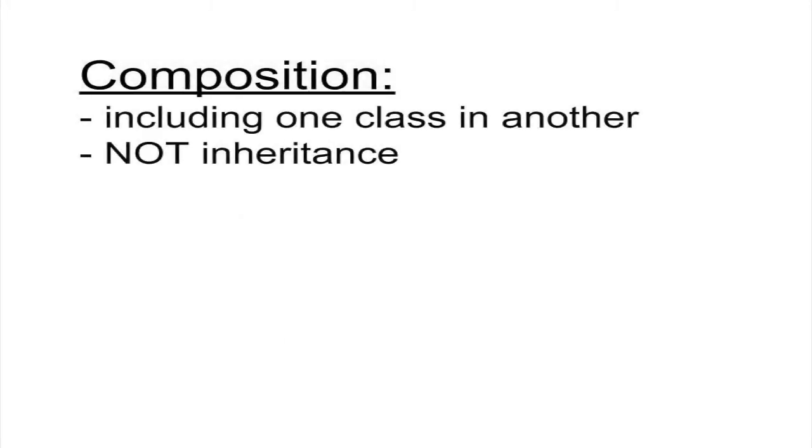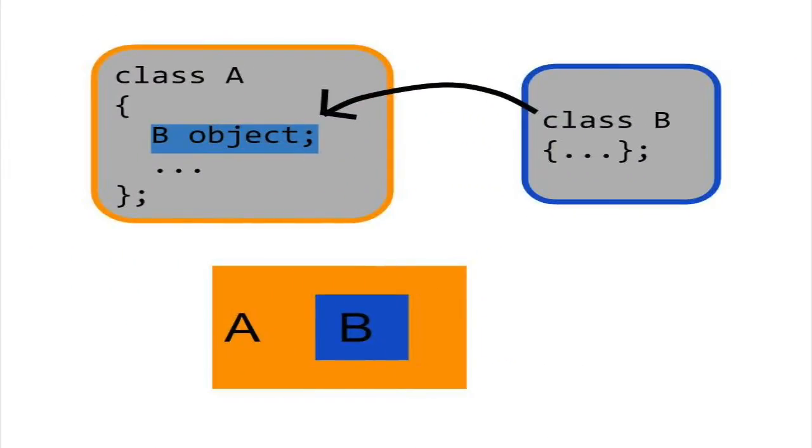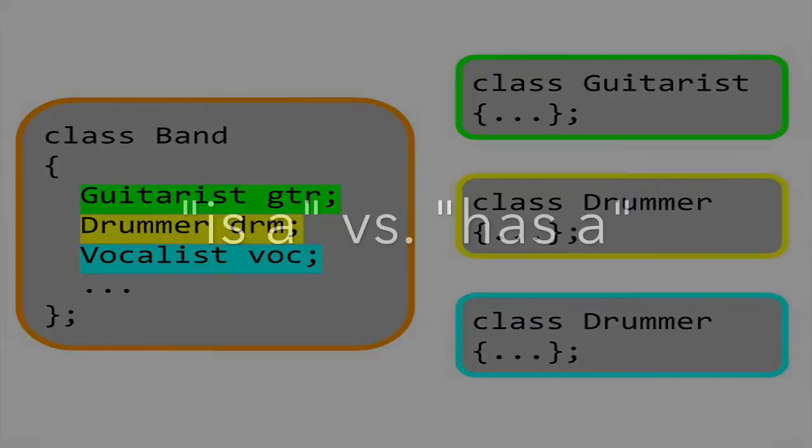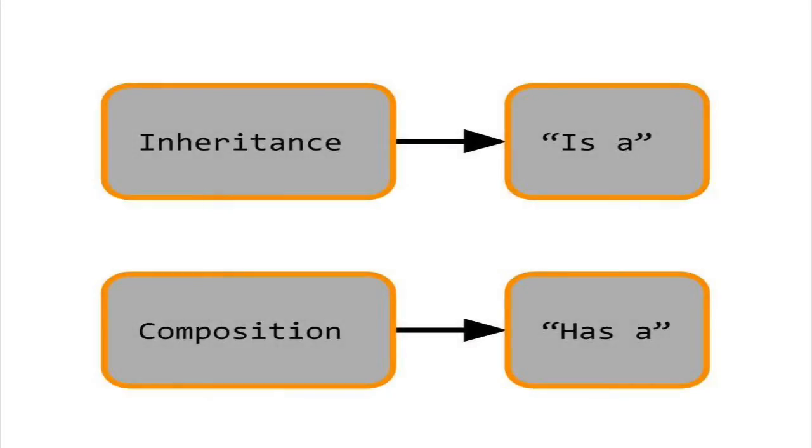Composition is the process of making one class a data member of another class. In a way, one class is embedded in the functionality of another. For example, you could have a class called band. The data members of band could consist of objects from the guitarist class, drummer class, and vocalist class. None of these classes are derived from each other. Instead, one class is using the objects of external classes.